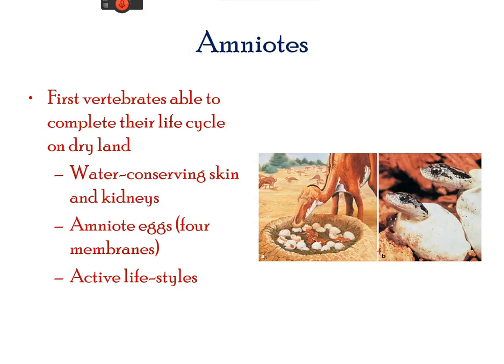The amniotes include reptiles, birds, and mammals. They are distinguished from amphibians in that they have an egg and an embryo protected by amniotic fluid. They are able to have a complete life cycle on dry land.